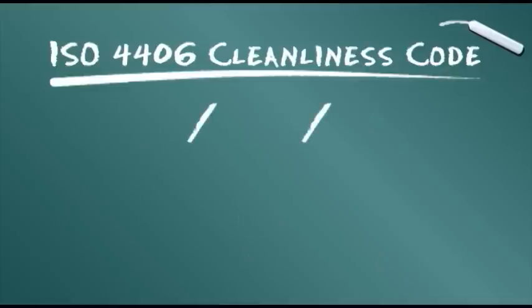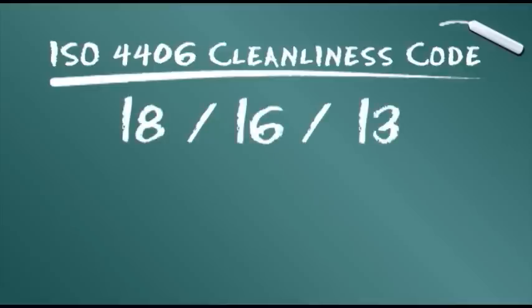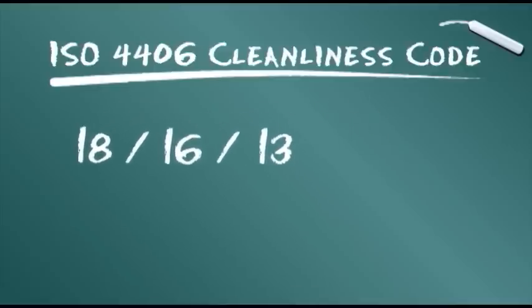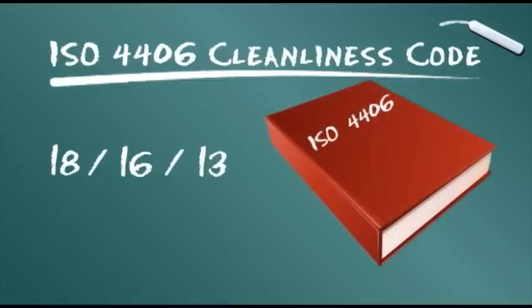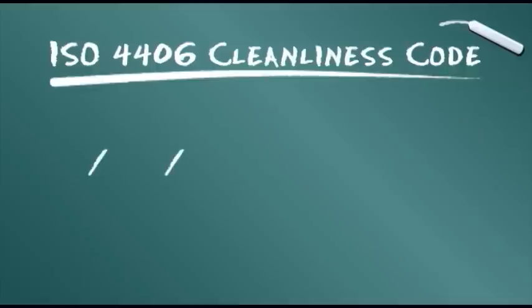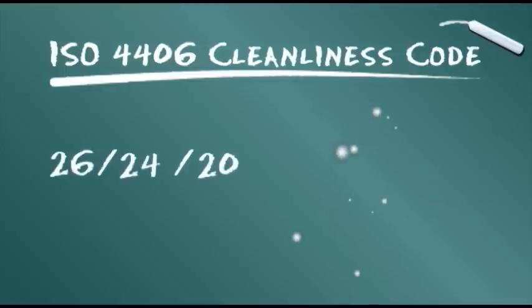The resulting figure, say 18/16/13, is the ISO cleanliness code level. Suggested ISO 4406 code cleanliness levels have been published. On the stringent side, for example, a 15/13/10 code level may be specified for servo valves with very close tolerances. A less demanding 26/24/20 would be suitable for low pressure systems with large clearances.